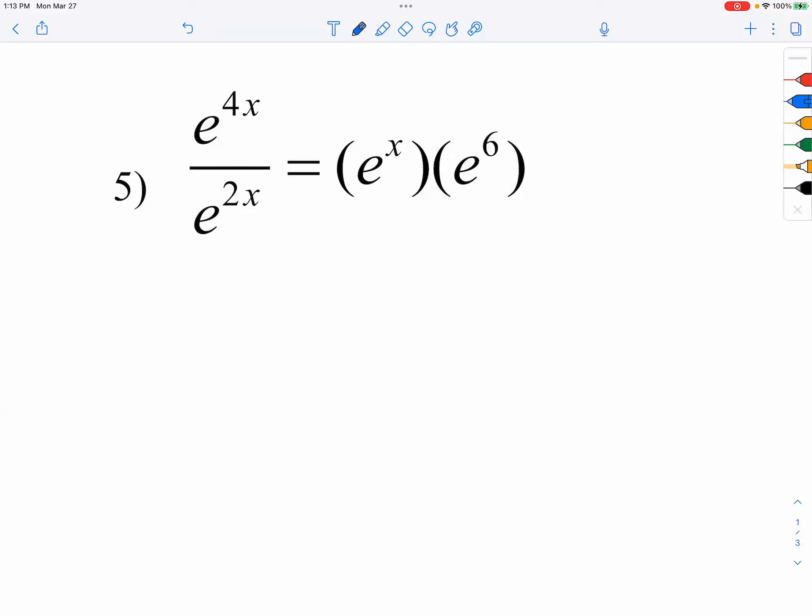Okay, for number five, again, it's all about the rules. On the left, it will be e to the 2x, because you subtract the exponents. On the right, it will be e to the x plus 6.